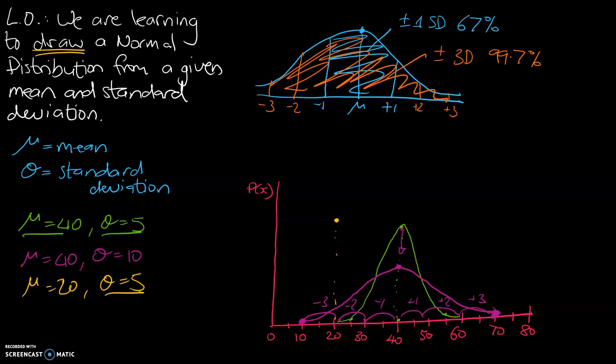And plus or minus 3 standard deviations is 15 either way. So this is going to come to 5 and that's going to come to 35. And using those points, we'll roughly be able to draw what our normal distribution curve might look like.